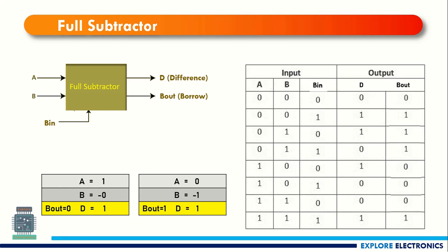Now let us see the full subtractor. In the full subtractor we have B_in as the third input, so we will be subtracting A, B and B_in. It is like A minus B minus B_in, and according to that we are going to get the difference and borrow out.